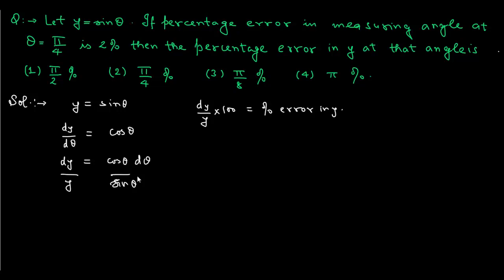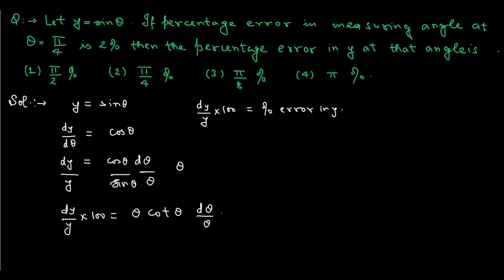In order to incorporate the 2% percentage error in θ and calculate dy/y, we divide dθ by θ and simultaneously multiply by θ. So the equation becomes dy/y = (cos θ / sin θ) · θ · (dθ/θ). Multiplying both sides by 100 to get the percentage error in y, we get cot θ · (dθ/θ) · 100, which is cot θ times the percentage error in θ.